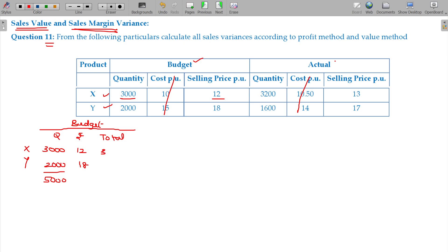The budget total is 36,000 for product X and 36,000 for product Y, giving us 72,000 in total budget.